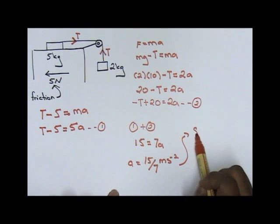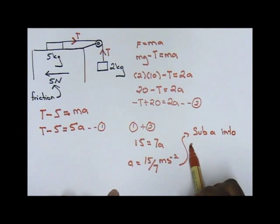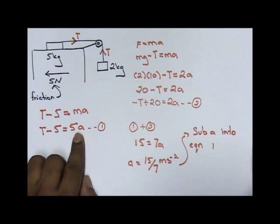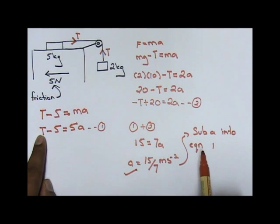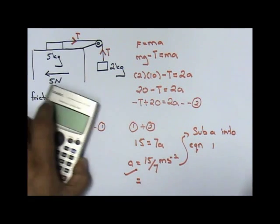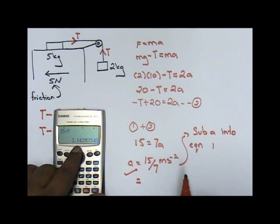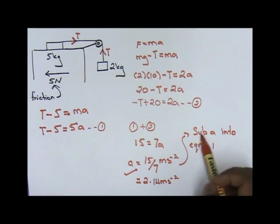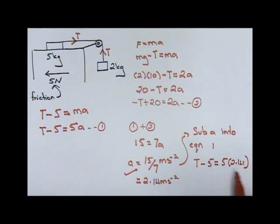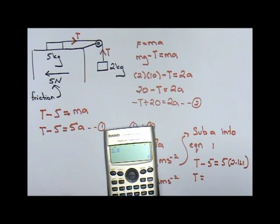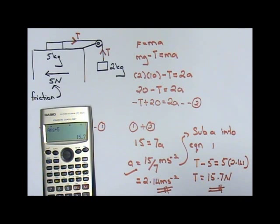What you have to do next is take this, sub a into maybe equation 1. When you sub a into equation 1, very simple, you can find the value for T. So I'm teaching you this question, you can find the value of a and also the value of T. 15 over 7, we use our calculator and solve it. 15 divided by 7 is 2.14, corrected to two decimal points. If I sub a into equation 1, T minus 5 equals 5 times 2.14. Sub the value. T equals 2.14 times 5, and after that negative 5 goes to the other side positive 5, so we'll get 15.7 newtons. You can see how simple it is to solve this kind of question.